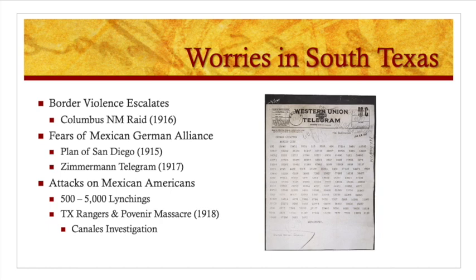One of the most vicious incidents was the Porvenir Massacre in 1918, where Texas Rangers attacked and killed the male residents of a small town in South Texas. This prompted an investigation by the Texas Senate led by José Canales. Through the Canales investigation, there were attempts to essentially dismantle the Texas Rangers, but what happened instead was the Rangers were reformed and reorganized with different restrictions placed on them, resulting in some meaningful reforms.